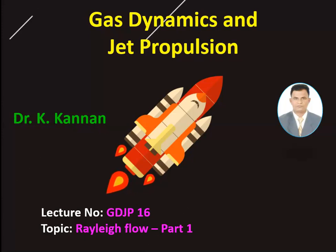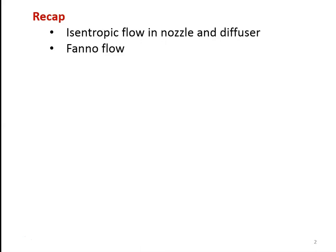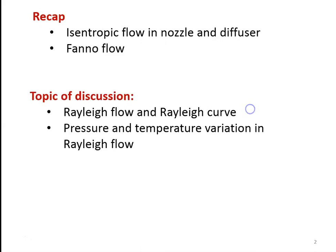This is lecture number 16 in Gas Dynamics and Jet Propulsion. We are going to discuss the Rayleigh Flow part 1. In the earlier lecture, we discussed the isentropic flow in the nozzle and diffuser, and we solved the problems with the isentropic flow, and we discussed the Fanno flow, and we solved the problem in the Fanno flow also. In this lecture, we are going to discuss the Rayleigh Flow. We will be defining Rayleigh Flow, discussing the Rayleigh curve and its significance, and calculating the property variation — pressure and temperature — in this lecture, with the remaining properties to be covered in the next lecture.